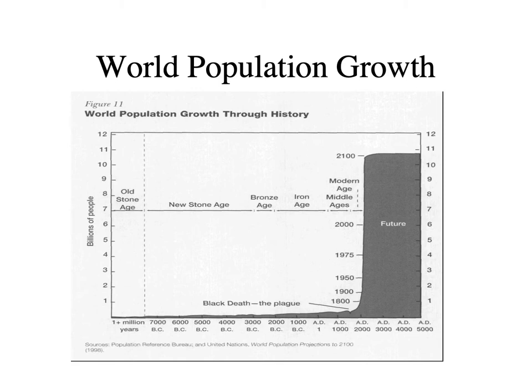This slide is an incredibly important one for thinking about sociology and the world in general. It tells us about world population growth through history. We see how it took a lot of time to reach 1 billion people until about 1800, and that we've been adding a billion people very quickly since. The slide predicts a future tailing off, though we don't really know what that future is going to be.